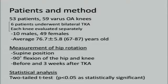53 patients with 59 knees were enrolled. Six patients underwent bilateral total knee replacement, with each knee evaluated separately. The average age was 76 years old. Measurement of hip rotation was performed in the supine position with 90 degrees of flexion of the hip and knee joint, before and three weeks after TKA.